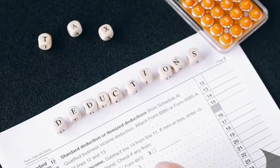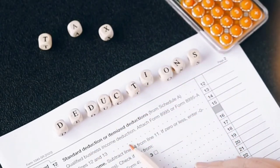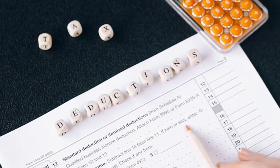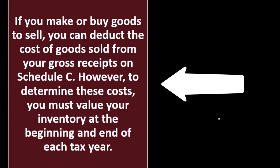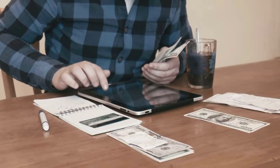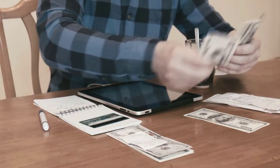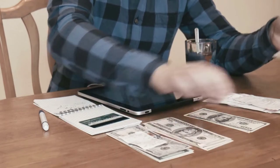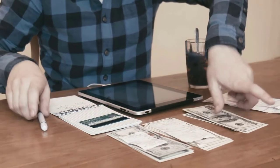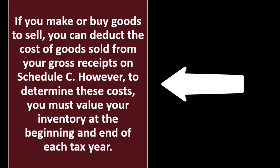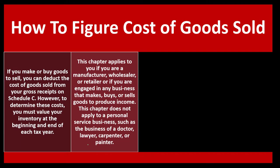Cost of goods sold is clearly one of the biggest deductions — a super special expense if your primary income is from selling goods, because the cost of goods sold is usually your biggest expense. To determine these costs, you must value your inventory at the beginning and end of each tax year. This is a periodic type of inventory calculation: beginning inventory plus purchases minus ending inventory gives you cost of goods sold.